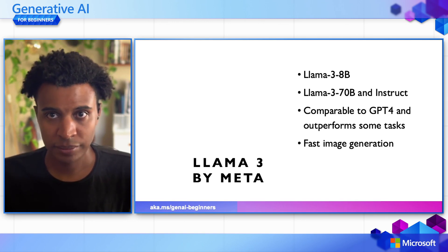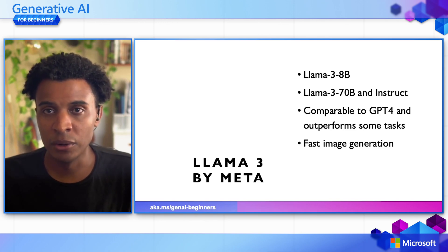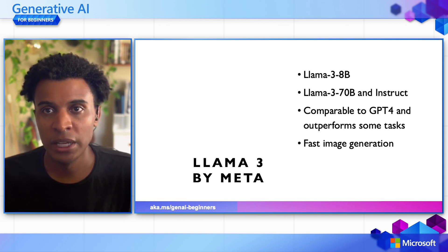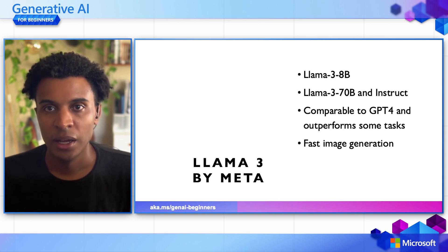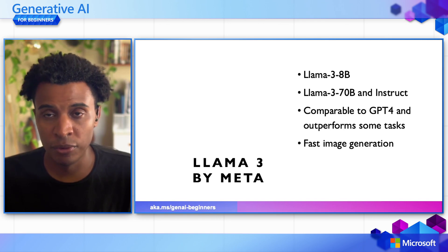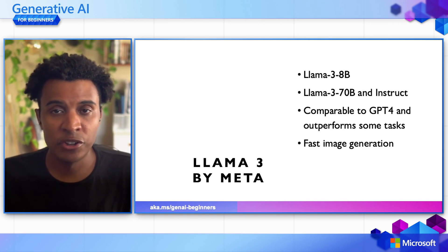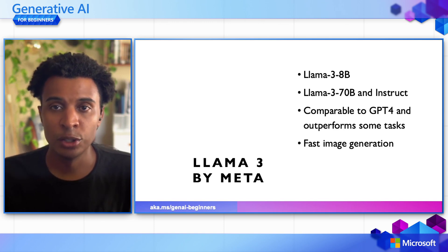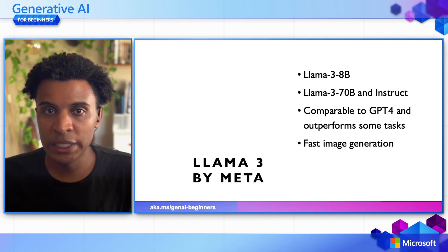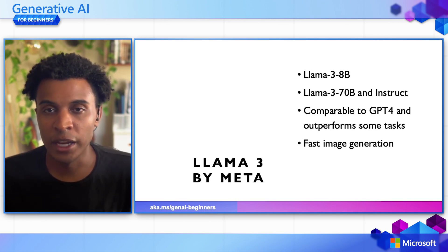The first model we'll look at is Llama 3. Llama 3 comes in three different model sizes: Llama 3 8B (8 billion parameters), Llama 3 70B (70 billion parameters), as well as Instruct versions for chat completions. Comparable to GPT-4, it even outperforms GPT-4 on some tasks. As an application builder, it's important to understand those tasks where it does outperform, so you can implement that for the best performance. Llama 3 also delivers fast image generation, making it worth experimenting with if your application requires that.